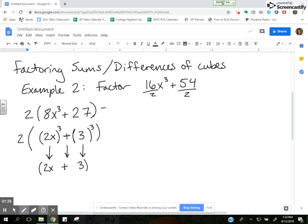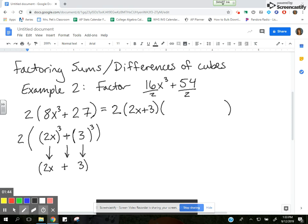So I know if I'm going to write the factors for this, I have that 2 that I factored out from the beginning, and then I have (2x + 3) times... and then I still have to figure out what else is going to go for my other factored form.